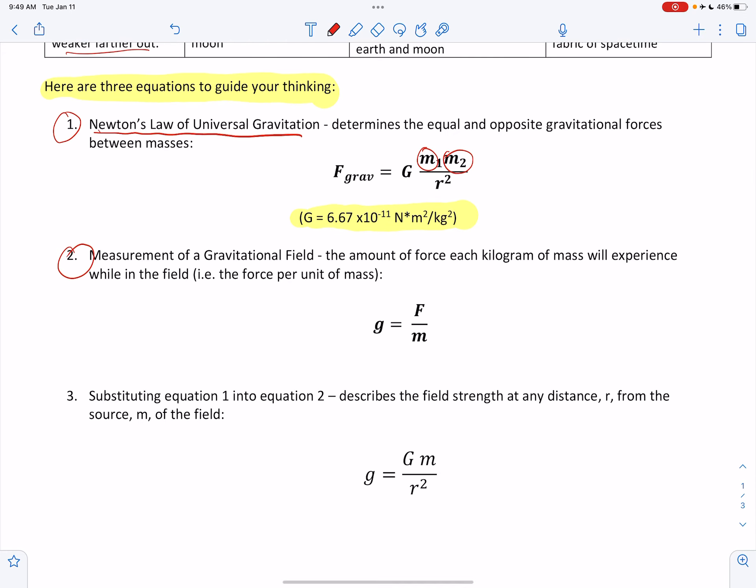The second equation here is a way of expressing a gravitational field. Little g is the letter that we use to represent a gravitational field. It is the force of gravity per unit of mass. In other words, if you stuck one kilogram of mass in the field, how much force would it experience? The amount of force each kilogram of mass will experience while it's in the field. The force per unit of mass. That would be expressed in units of newtons per kilogram.